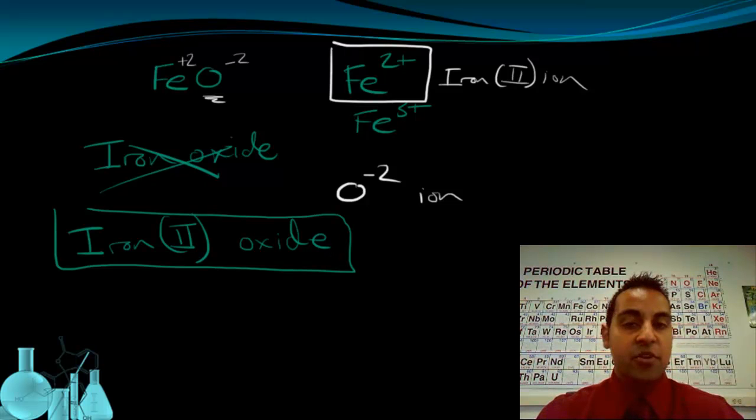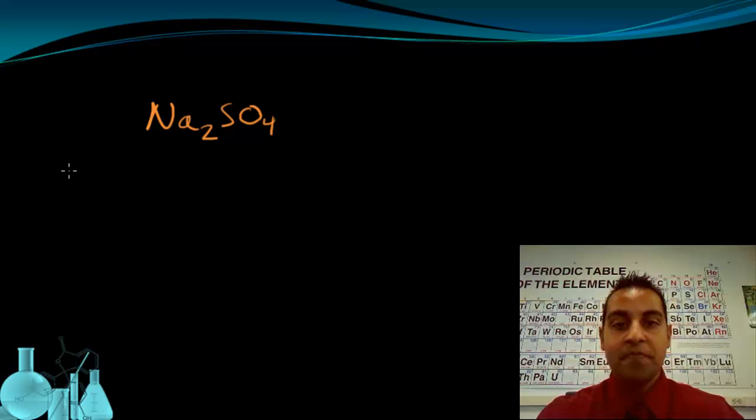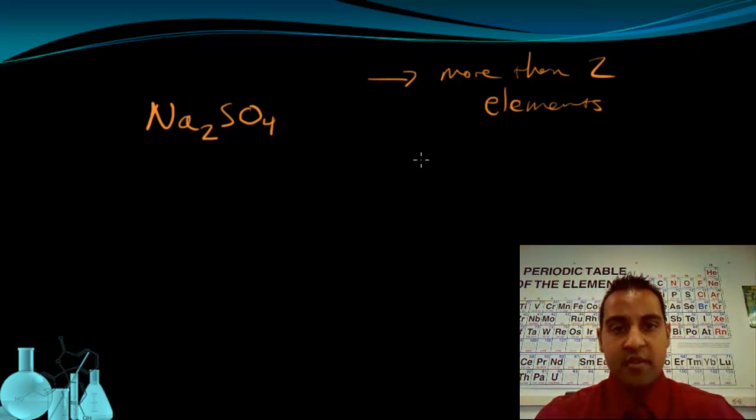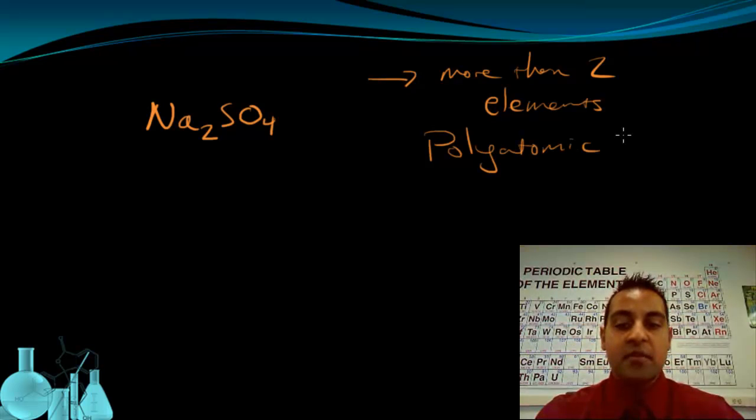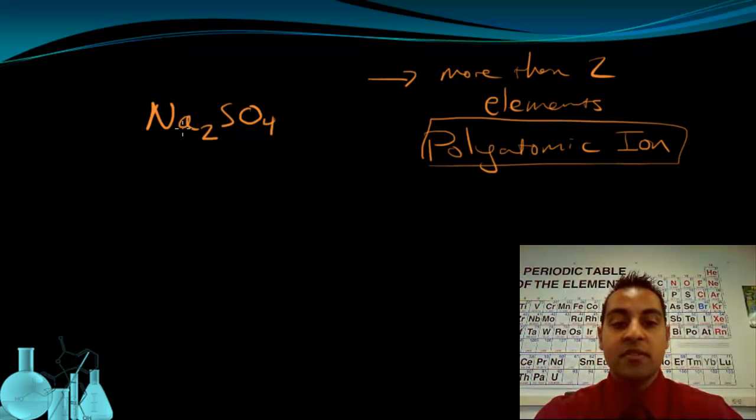The last case we're going to look at may look a little bit complicated at first, but it's actually pretty straightforward. Let's look at the compound Na2SO4. If you examine this formula carefully, there's something about it that's very different from the last ones we looked at. The major difference that we notice is that there's more than two elements in this compound. That tells us that we must have a polyatomic ion present.